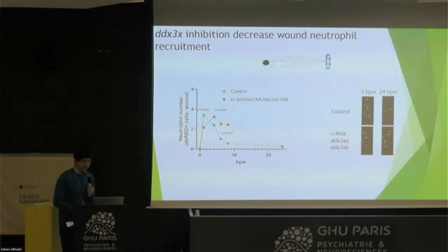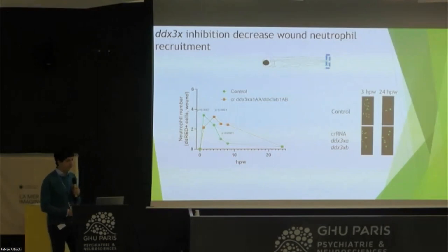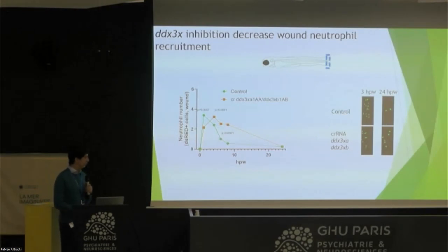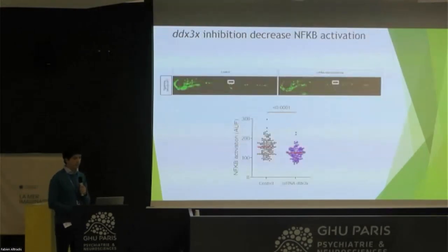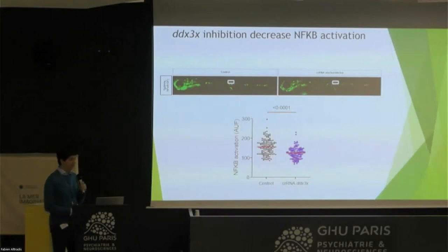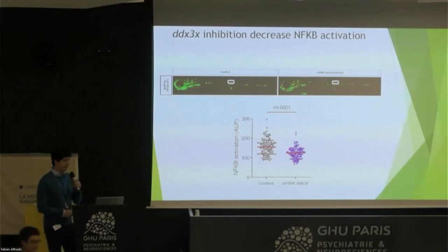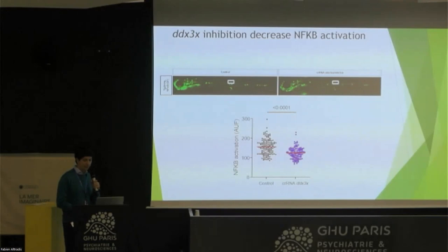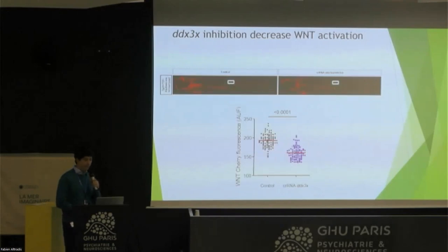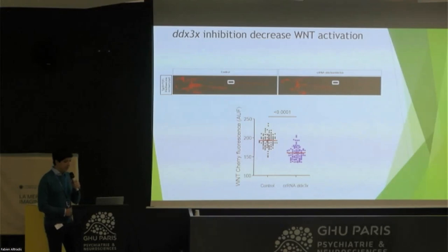Following these pathways, we also have different transgenic lines — not only with cell markers in green, but also other molecules shown in colors, like NF-κB, which is involved in inflammation. We can see that this inflammation molecule is reduced when we inhibit DDX3X. Also, the Wnt pathway, which has been mentioned before, is also reduced.